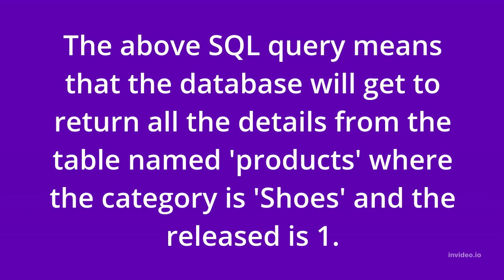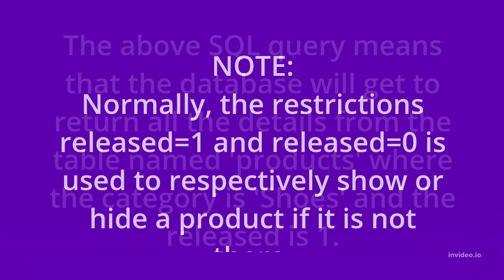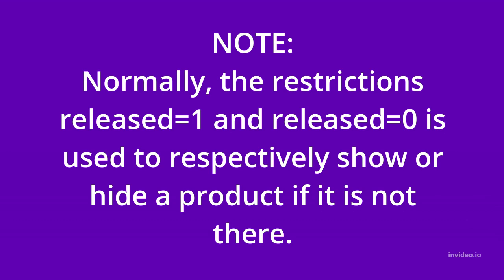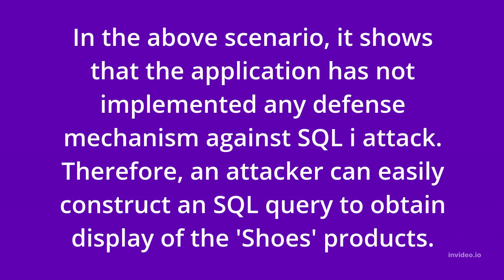The above SQL query means that the database will return all the details from the table named products where the category is shoes and the released is one. Normally, the restrictions released equals one and released equals zero are used to respectively show or hide a product. In the above scenario, it shows that the application has not implemented any defense mechanism against SQL injection attack.